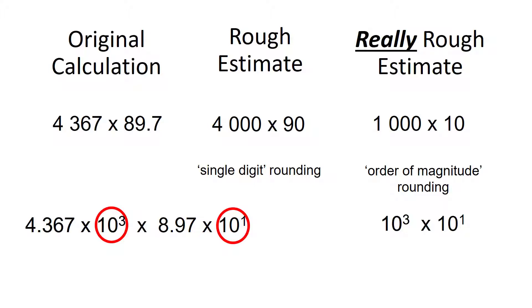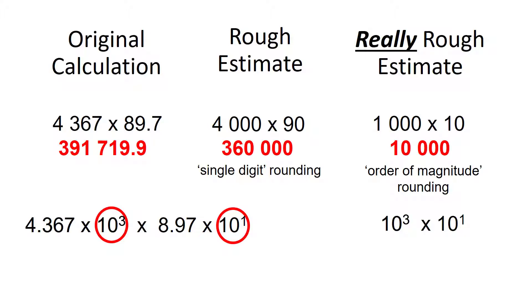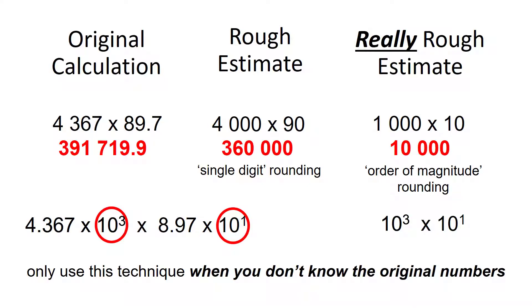All we care about is that we've got a number in the thousands multiplied by a number in the tens. The trouble with this particular example is that our order of magnitude estimate is a bit rubbish. If we do the original calculation, we get 391,719.9. Our rough estimate of 360,000 isn't perfect, but at least it's in the right ballpark. On the other hand, our really rough estimate of 10,000 is out by a factor of 36 — it's useless. We only use this type of rounding when we really have little or no idea of what the original numbers were, and we have to make some pretty wild guesses to the nearest order of magnitude.